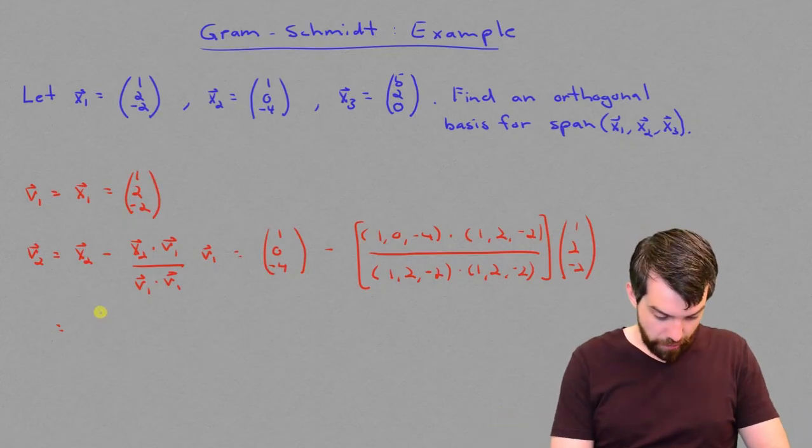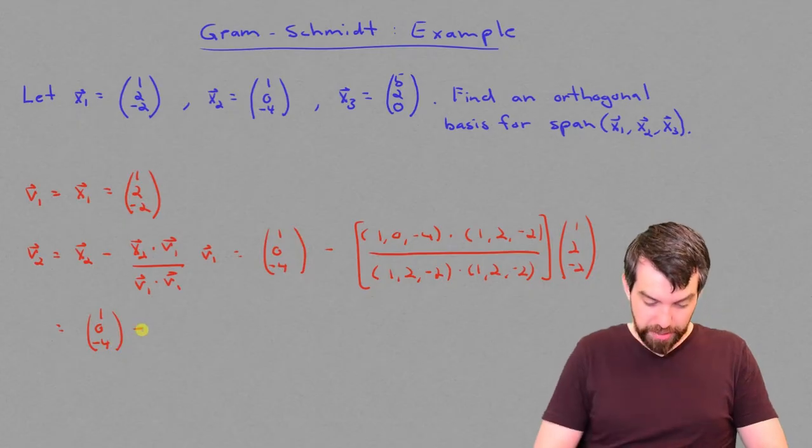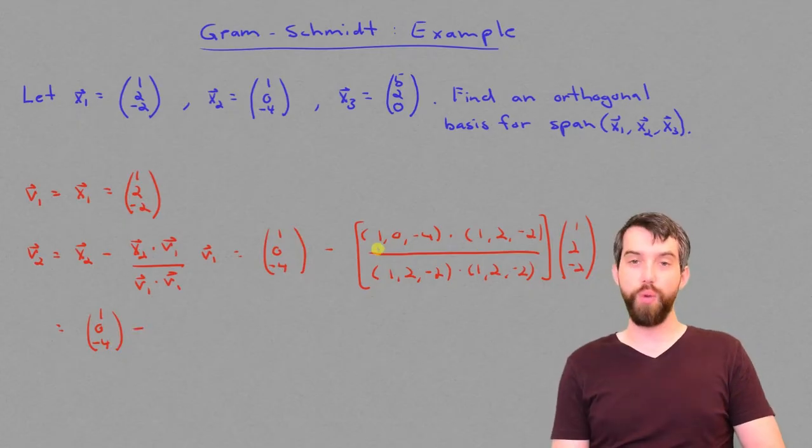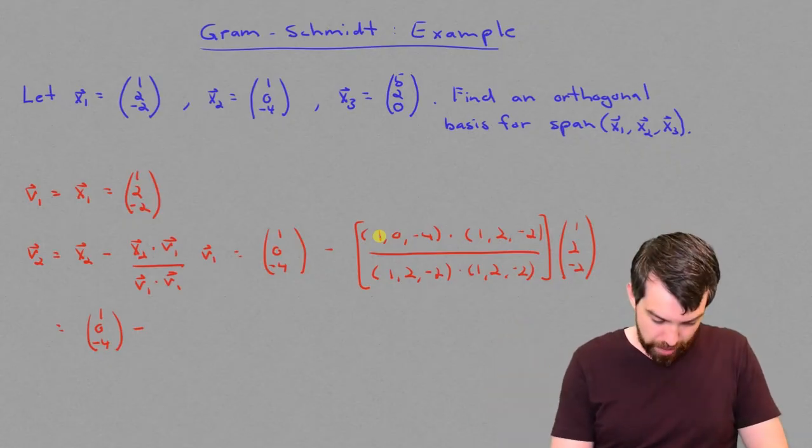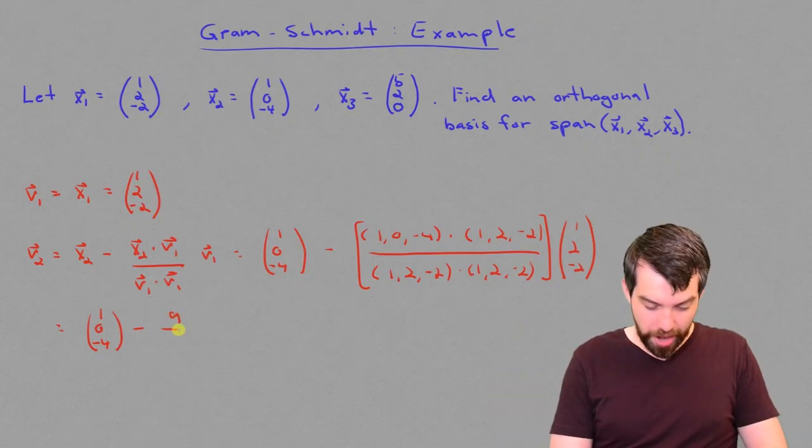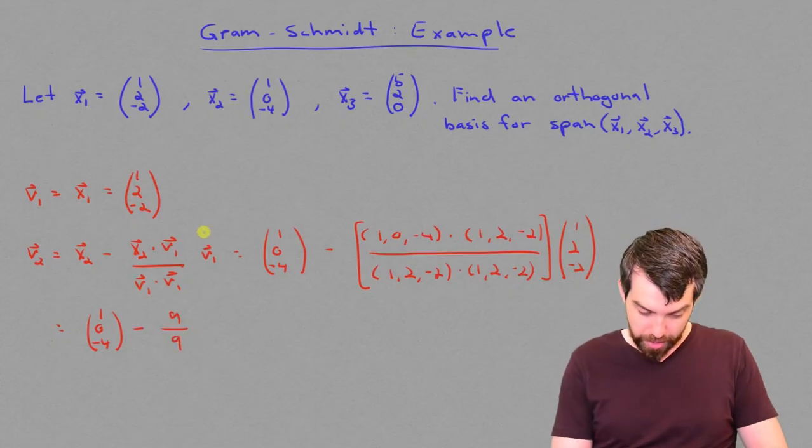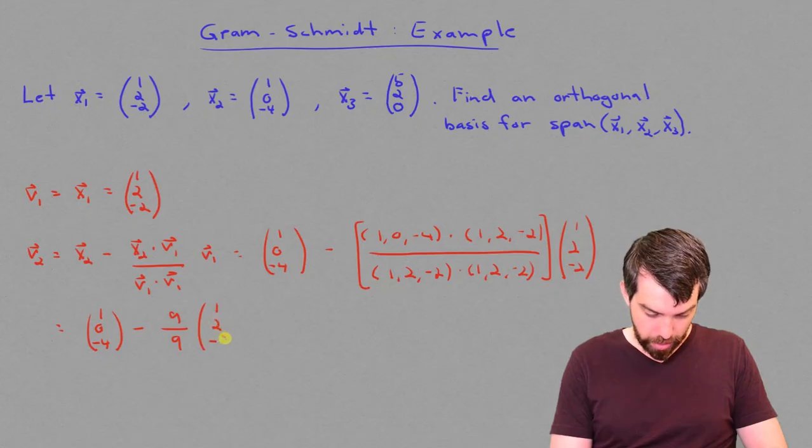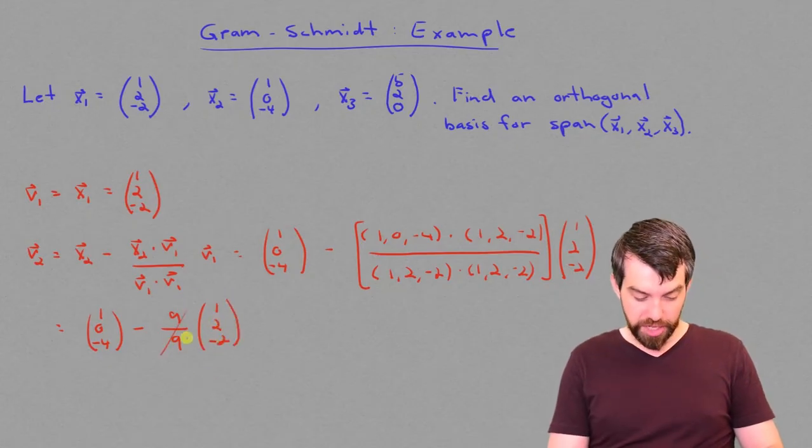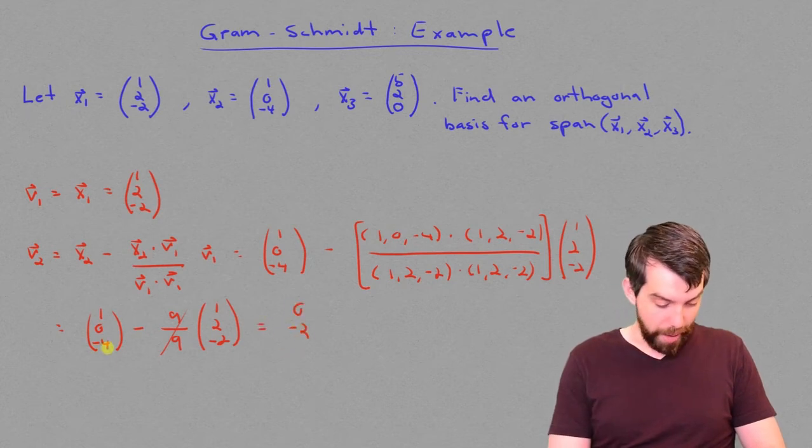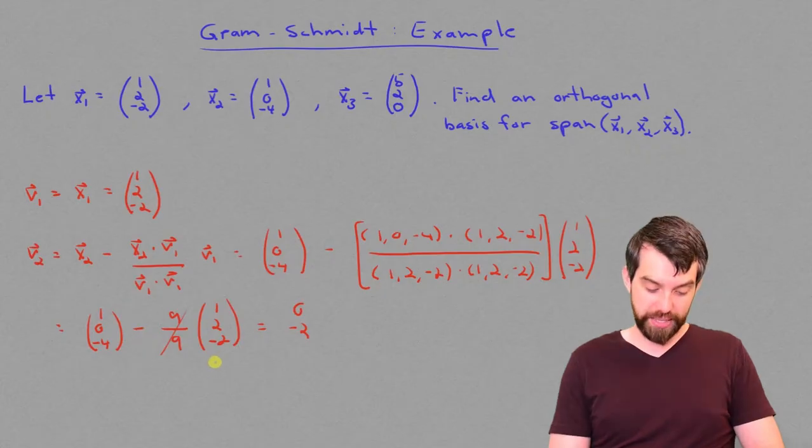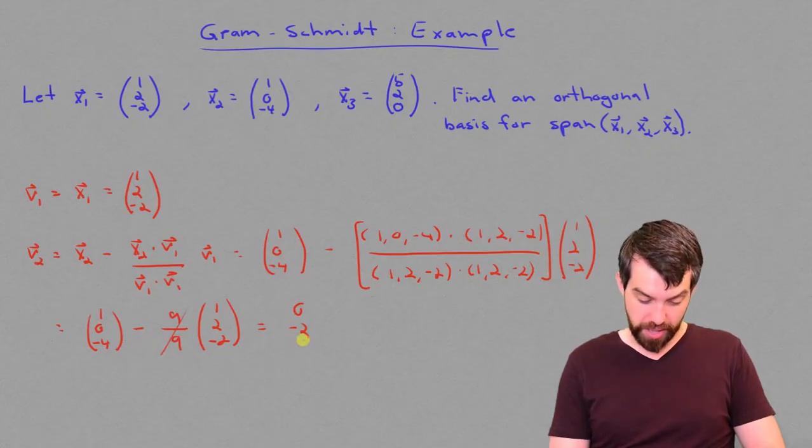So let's do these dot products. We're going to have 1, 0, minus 4. And then I'm subtracting off on the top, it is going to be a 1 plus a 0 plus 2 minus is a positive, plus an 8, so a 9 on the top. And then 1 plus 4 plus 4 is another 9 on the bottom. So that's 9 over 9, which is convenient. That's just going to be a 1. You can sort of ignore that entirely. And so it's going to be a 1 minus 1 is a 0, a 0 minus 2 is a minus 2, and a minus 4 minus a minus 2 is going to be a minus 2.